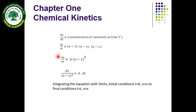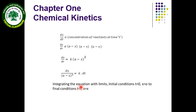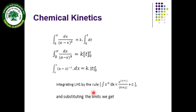To find the applicable integrated form, we need to integrate this equation. We rearrange it so that concentration terms are on one side and time terms are on the other side. The limits used for integration are: initial conditions — t equals 0, x equals 0 (meaning initially concentration of product is zero); and final conditions — at any time t there is a concentration of product x.